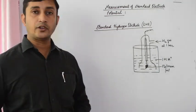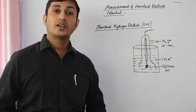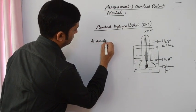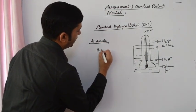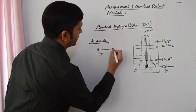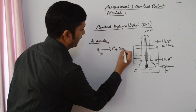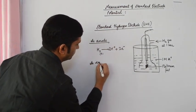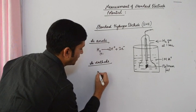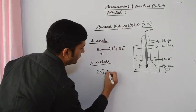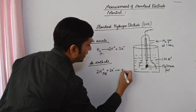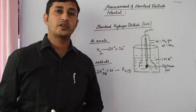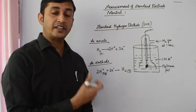When the standard hydrogen electrode acts as an anode, hydrogen gas molecules get oxidized to hydrogen ions — the hydrogen molecule loses an electron and changes into hydrogen ions. In the same way, when it acts as a cathode, hydrogen ions from the solution gain electrons and get reduced to form hydrogen gas. Thus the standard hydrogen electrode can act both as anode and cathode, so it is used as a reference electrode to determine the standard electrode potential of other electrodes.